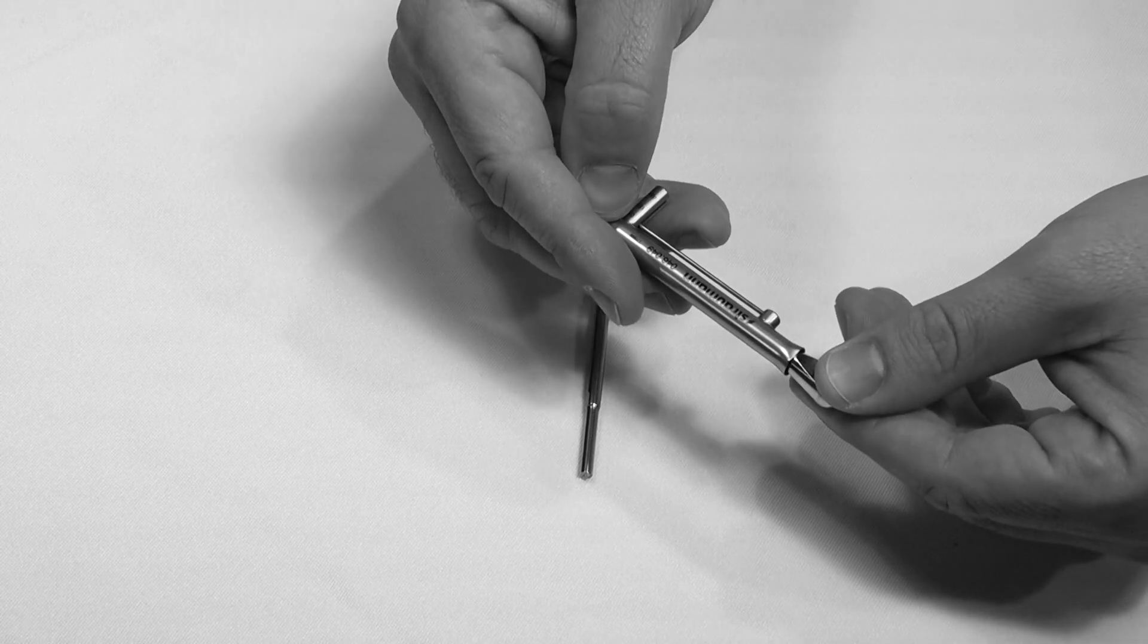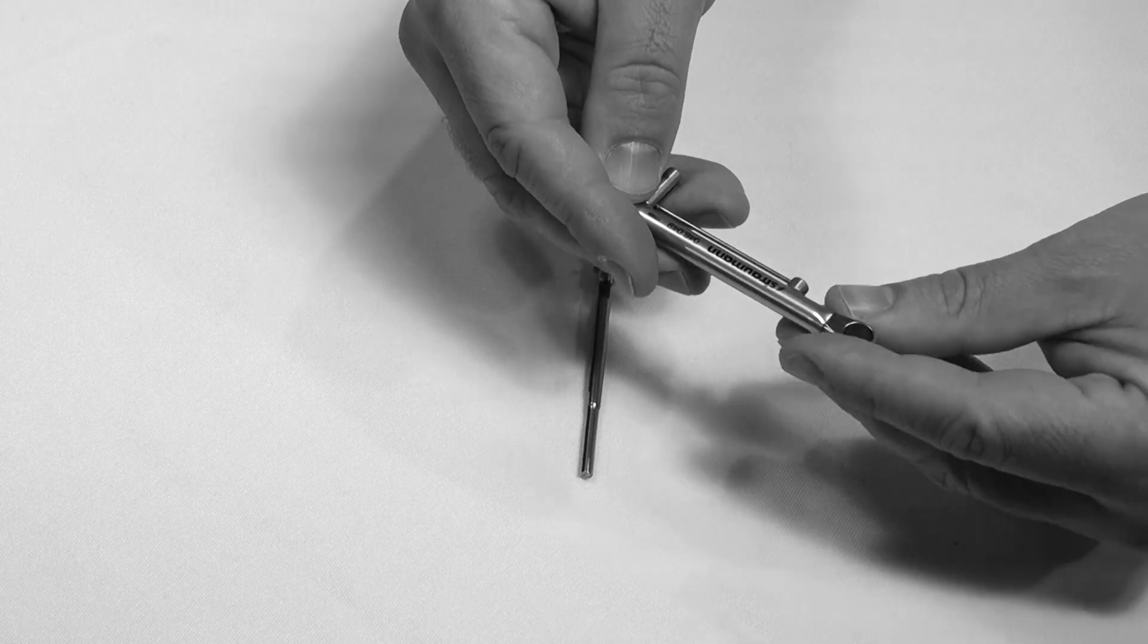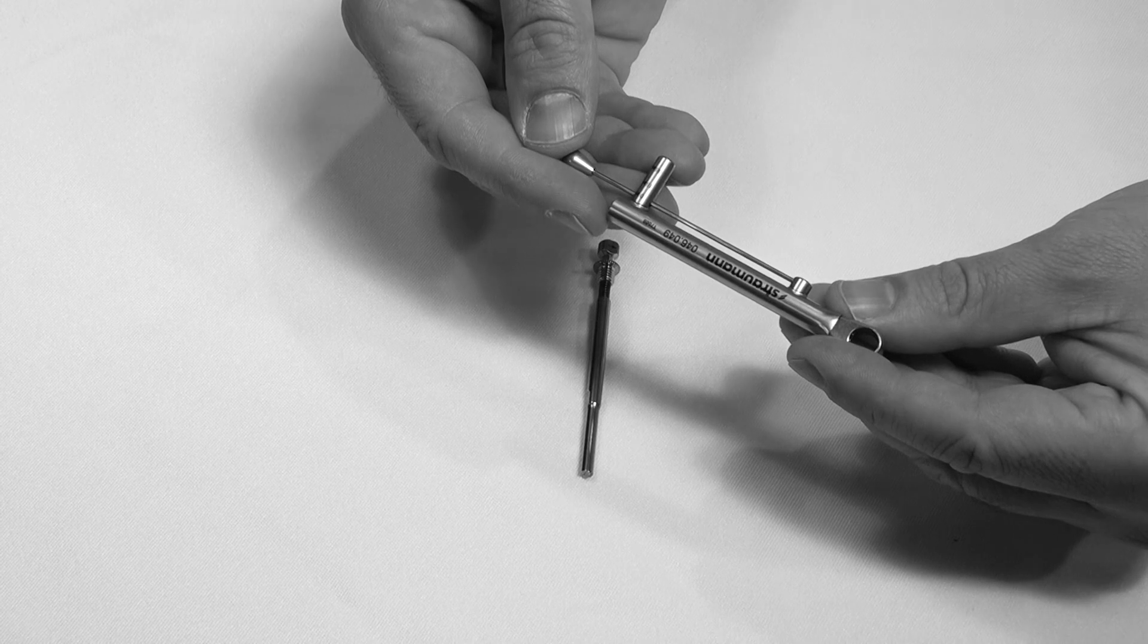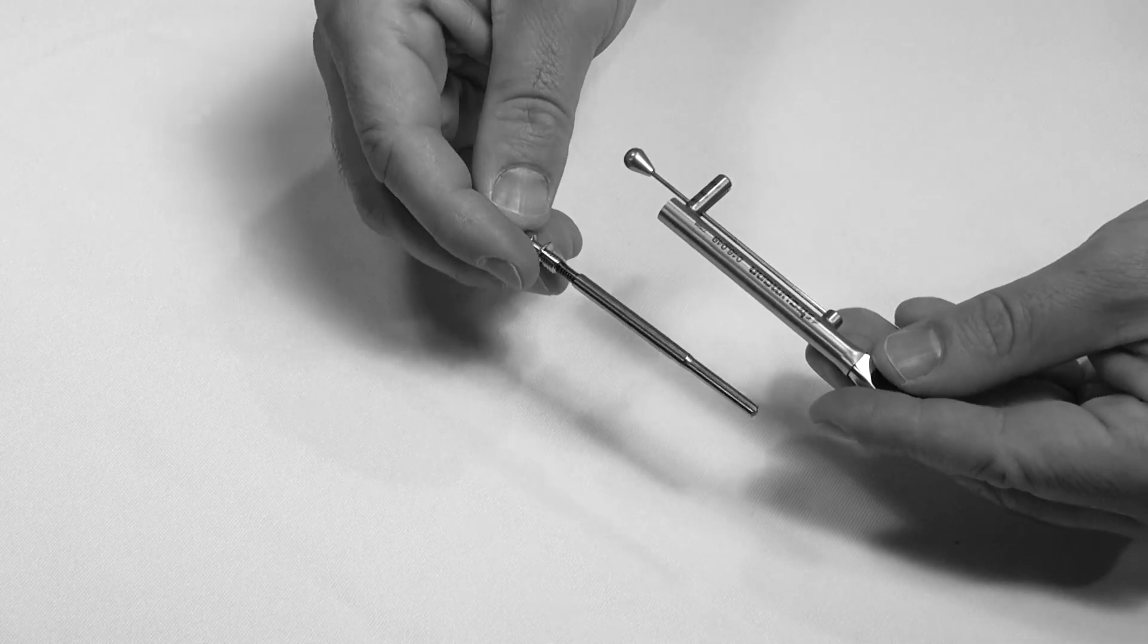First, insert the ratchet into the torque control device. Note that the round head of the ratchet is to be inserted into the flared end of the torque control device.